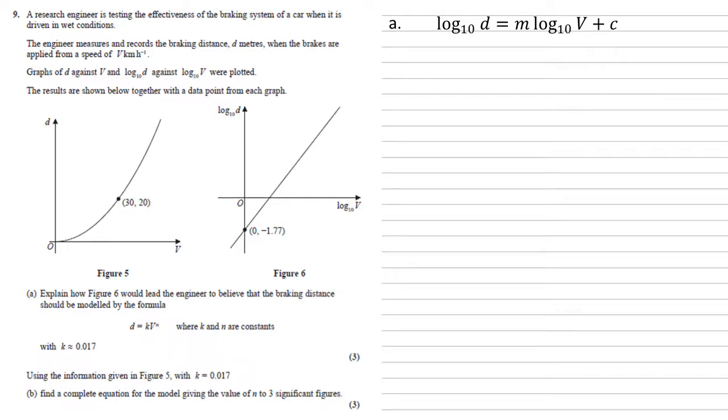Going back to the formula d equals k v to the n, let's try and get this into that format. Taking logs of both sides we get log d equals log of k v to the n. Inside that right hand side we've got k times v to the n, so by the rules of logarithms we can split that up into log k plus log v to the n, and we've got a power inside the log so we can bring that out as a multiple: log k plus n log v.